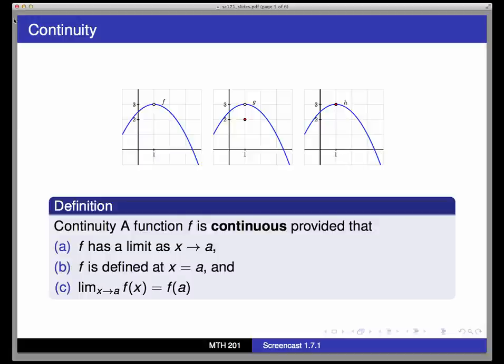So in other words, the function has to be defined at this point x equals a, so there's no hole in the graph there. The function f has to approach a single value as x approaches a, both from the left and from the right, and this value equals the value that f actually takes on when we reach x equals a.